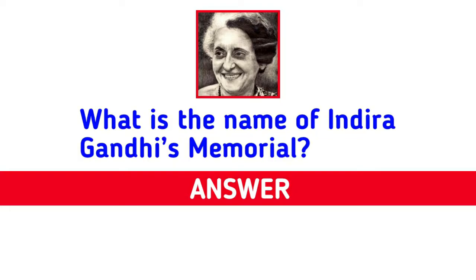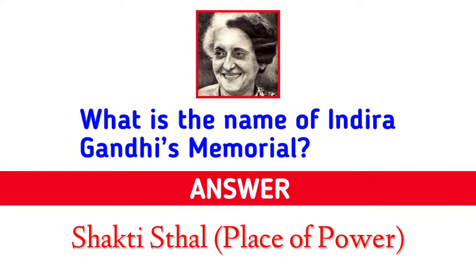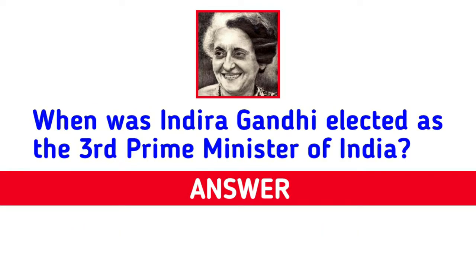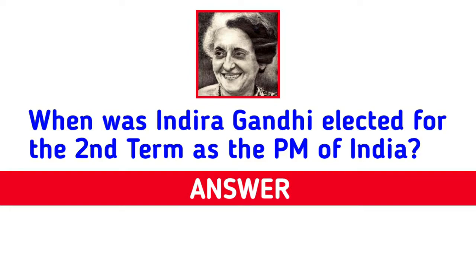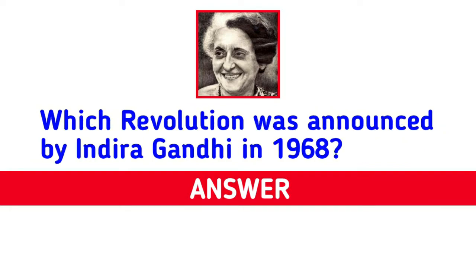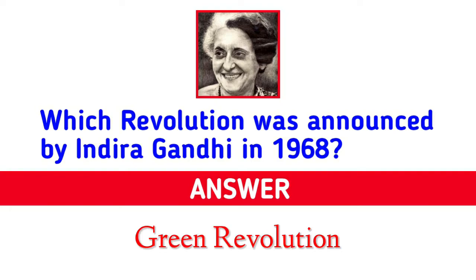What is the name of Indira Gandhi's memorial? Answer: Shakti Sthal, place of power. When was Indira Gandhi elected as the third prime minister of India? Answer: 24 January 1966. When was Indira Gandhi elected for the second term as PM of India? Answer: 14 January 1980. Which revolution was announced by Indira Gandhi in 1968? Answer: Green Revolution.